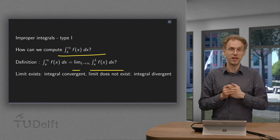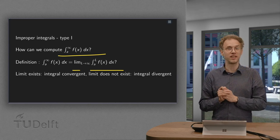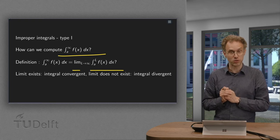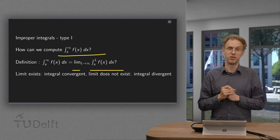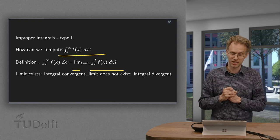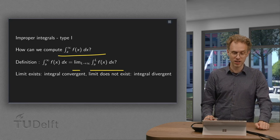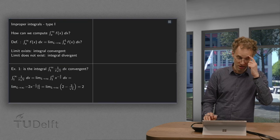You have to take a limit, so the limit can exist — then the improper integral is called convergent — and if the limit does not exist, then the improper integral is called divergent. So let's do a few examples.